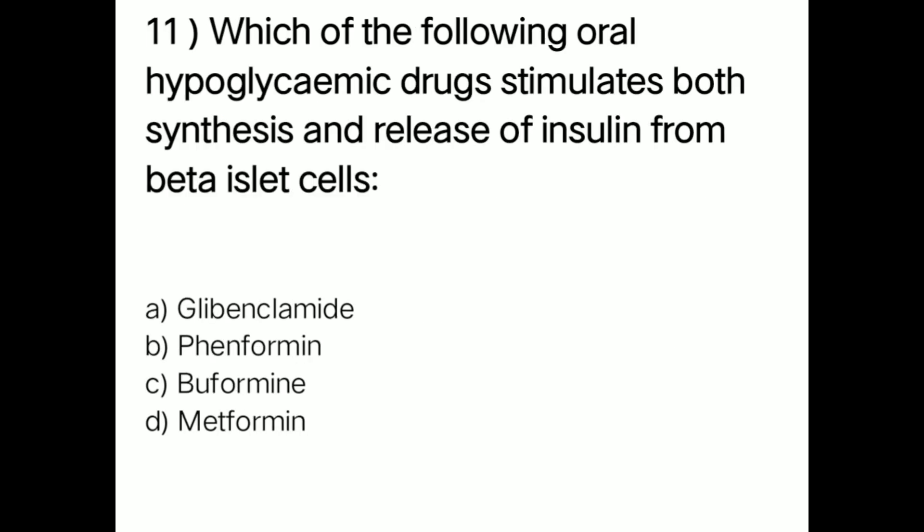Next question: which oral hypoglycemic drug stimulates both synthesis and release of insulin from the beta islet cells? Option A: glybenclamide; option B: phenformin; option C: buformin; option D: metformin. Right answer is option A — glybenclamide, which stimulates both synthesis and release of insulin from the beta islet cells.